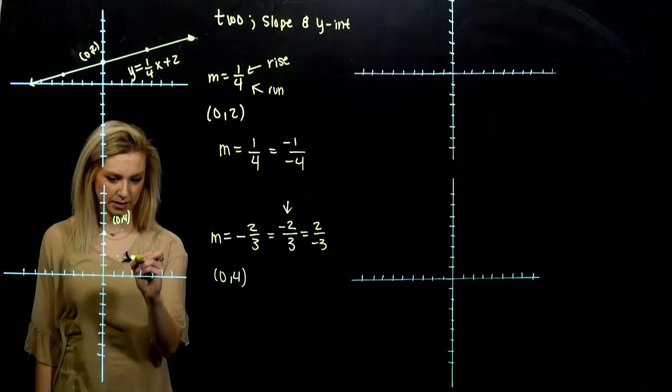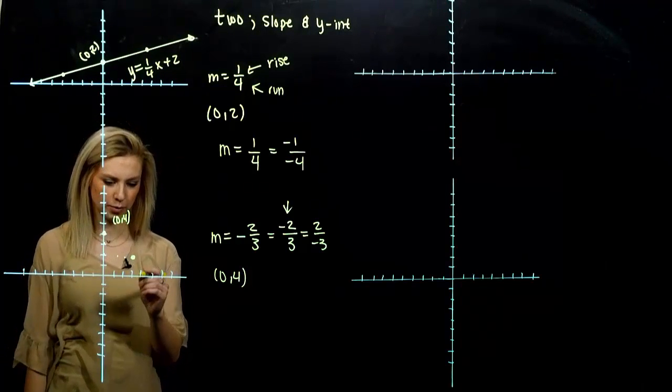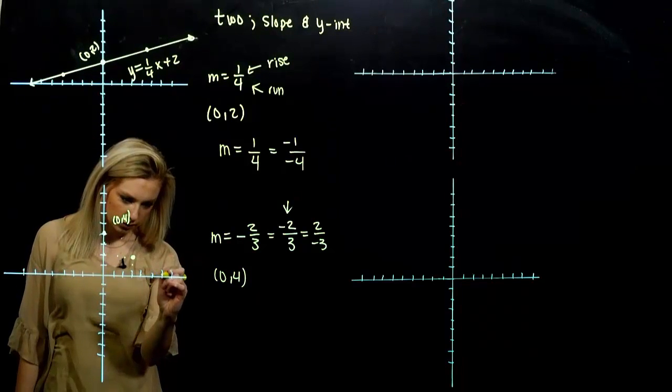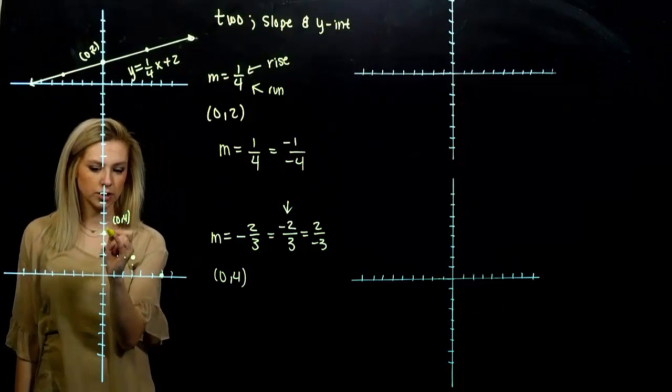We could do it again from there to get another point, draw our line more accurate. Falling two, running one, two, three.